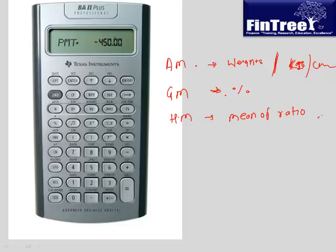We will be studying many ratios. For example, delta is a ratio associated with options — when you want to calculate the mean of deltas, the appropriate mean is harmonic mean, not arithmetic mean.